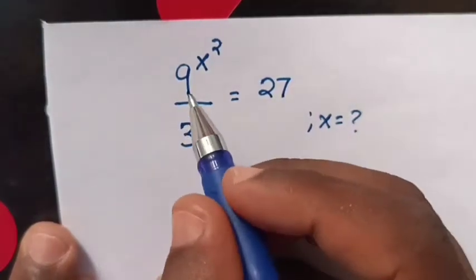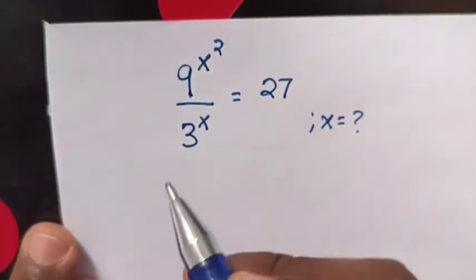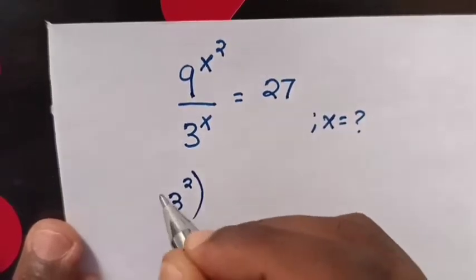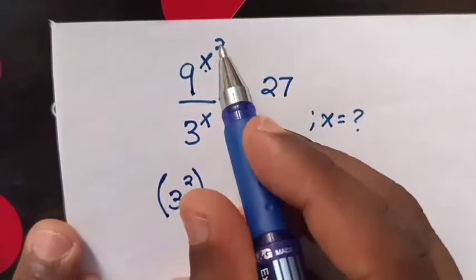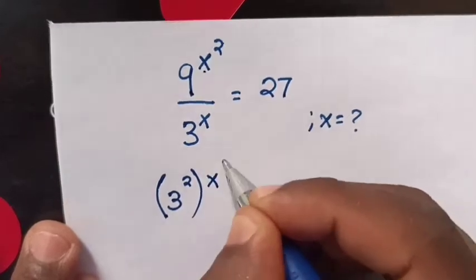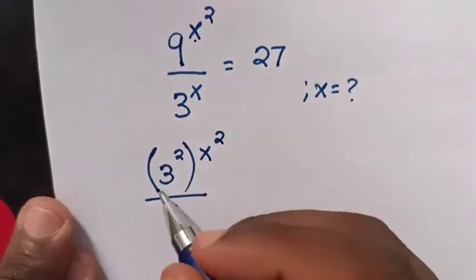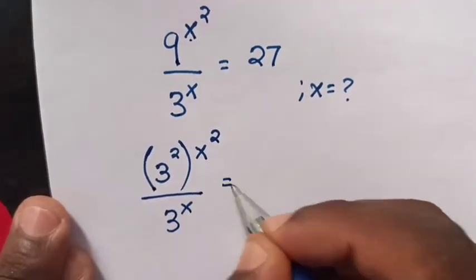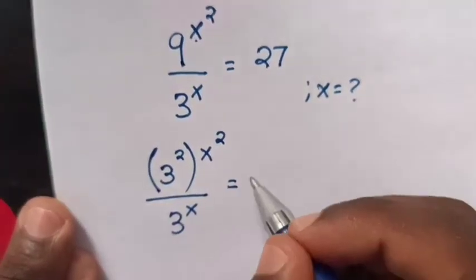From 9 power x square, 9 is 3 squared. Then bracket 3 squared power of x square over 3 power x equals 27.